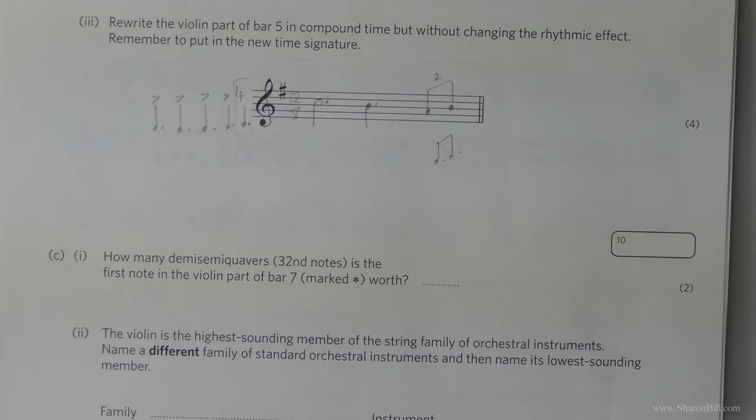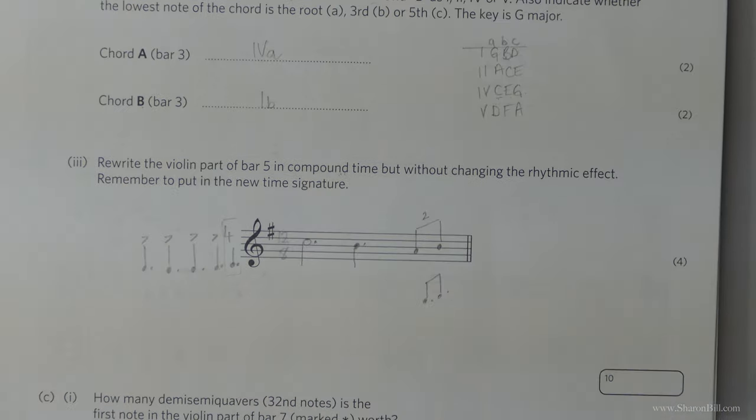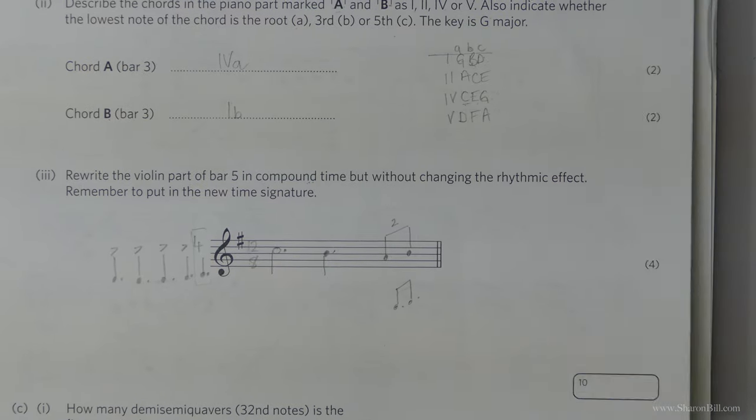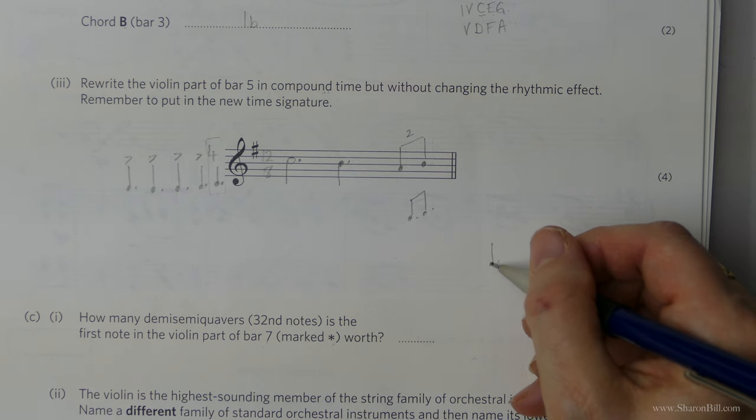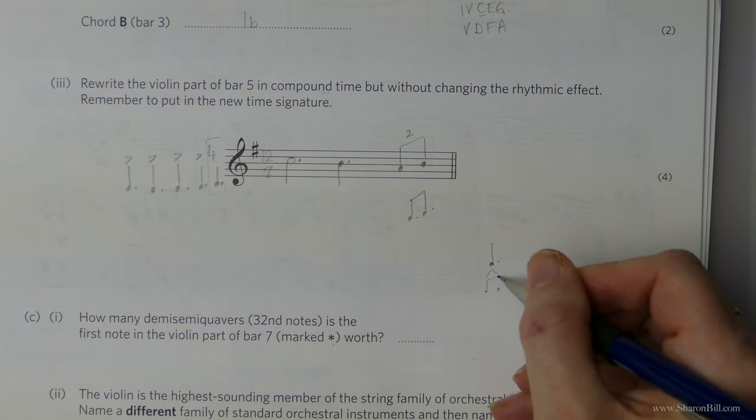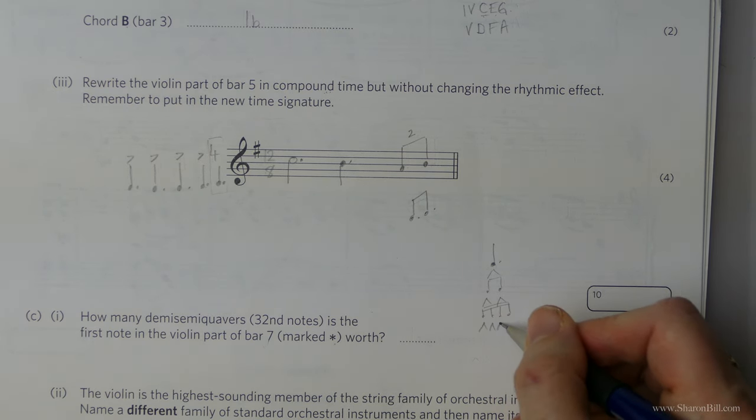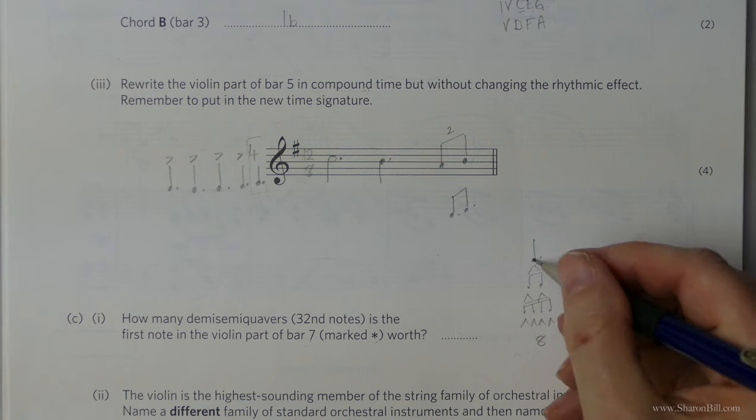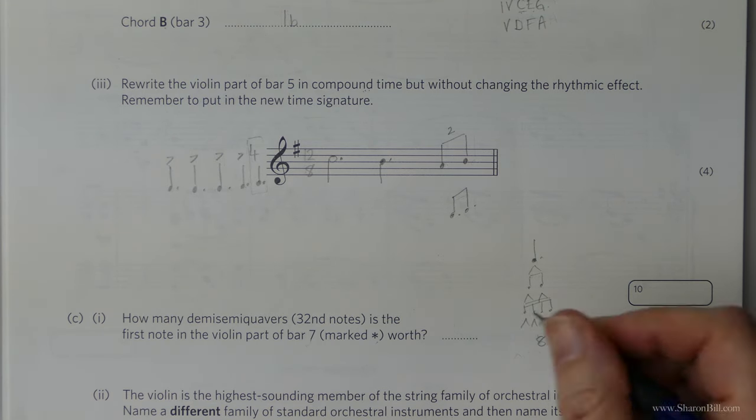So moving on. How many demi-semiquavers or 32nd notes is the first note in the violin part of bar 7 marked with a little star worth. So let's see what we've got. It's this note here, a dotted crotchet or a dotted quarter note. So we have a dotted crotchet. So that divides into 2 quavers, which divides again into 4 semi-quavers, which divides again into 8 demi-semis, 8 32nd notes. So that's the crotchet dealt with. And then a dot is half as much again. So half of 8 is 4. And so 8 plus 4 equals 12. So there we go, 12.